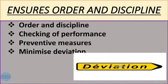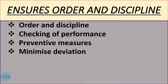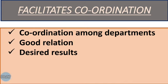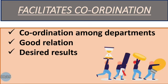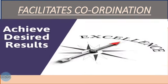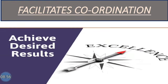Controlling also facilitates coordination. This is one of the important functions of controlling, which facilitates coordination among the various departments. Through proper coordination, there is always a possibility of having a good relationship between all departments. If any deviation is found in any of the departments, remedial measures are applied so that desired results can be achieved by the organization.